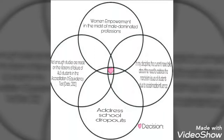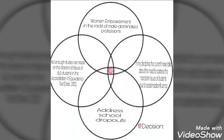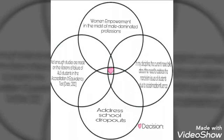Now let's take a look at my sample. I would like to address gaps in the literature, so I'll go with the topic on accreditation. I've written that not enough studies are made on the reasons for failure of out-of-school students in the accreditation and equivalency test as of 2012. If you see that statement, that is already a sign that it is a literature gap. Take note that this is a made-up literature and is not really existing. So that's my literature gap.